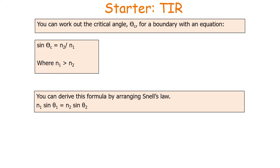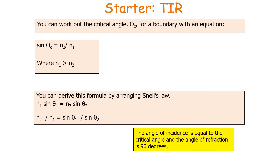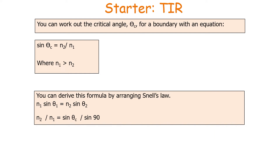You can derive this formula by rearranging Snell's law: n1 sine theta1 equals n2 sine theta2. Rearranging gives n2 over n1 equals sine theta1 over sine theta2. For the instance when the angle of refraction is 90 degrees, theta2 equals 90 degrees and theta1, the angle of incidence, is by definition the critical angle. Substituting these values: n2 over n1 equals sine theta c over sine 90. Since sine 90 equals 1, we get sine theta c equals n2 over n1.